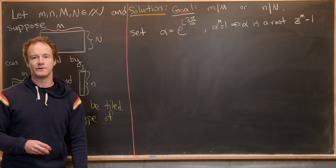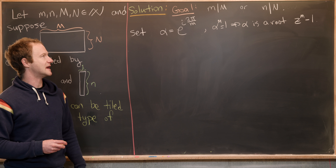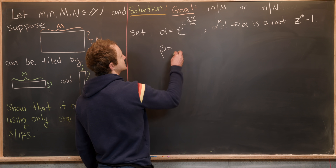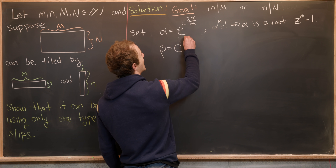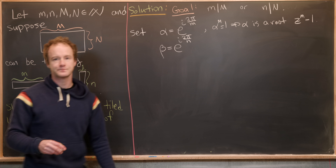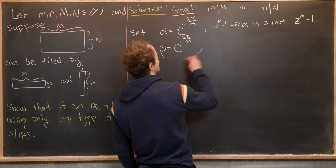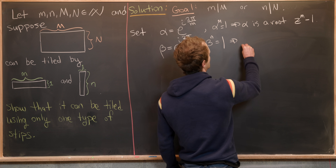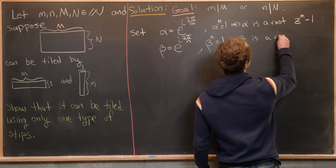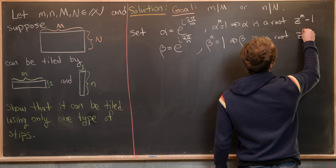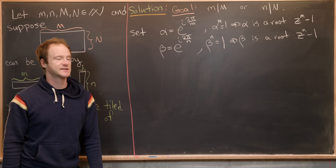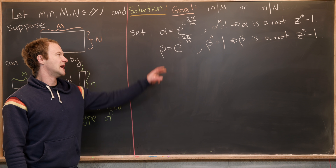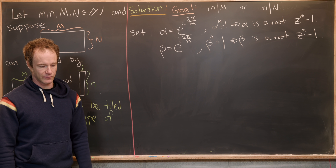We'll also need our little nth root of unity. Let beta equal e^(2πi/n), which tells us that beta to the n equals one — in other words, beta is a root of z^n minus one, and this is a primitive nth root of unity.